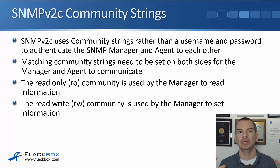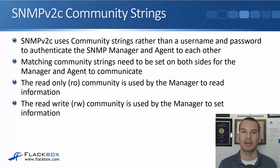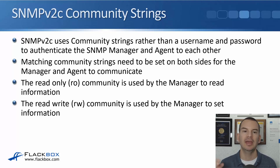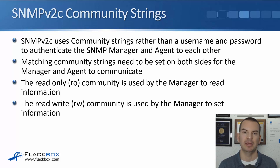In SNMP version 1 and version 2C, authentication uses community strings rather than normal usernames and passwords. The community string authenticates the SNMP manager and agent to each other — it acts just like a password, and the same community string value must be set on both the agent and the manager. There are both read-only and read-write community strings: the read-only community is used by the manager to read information, and the read-write community is used to set information.